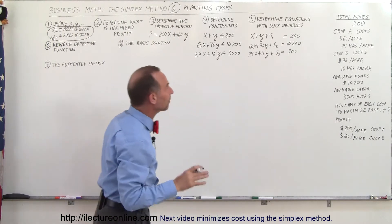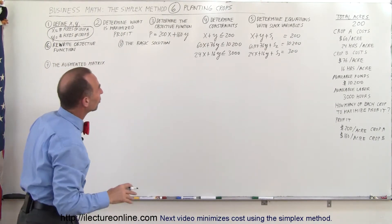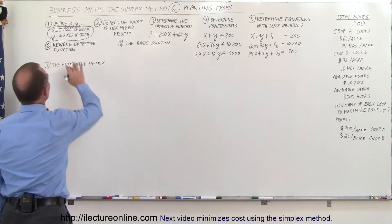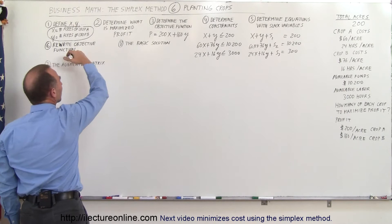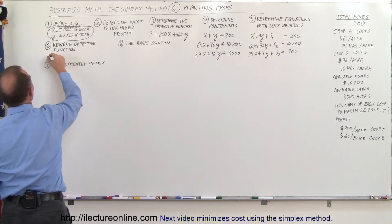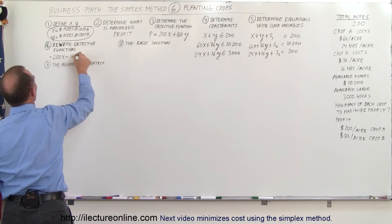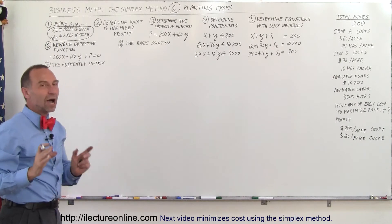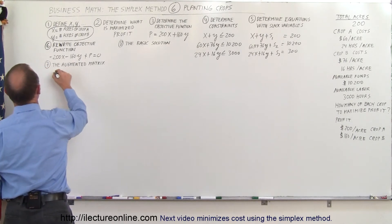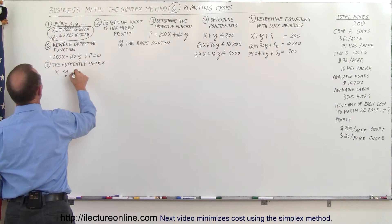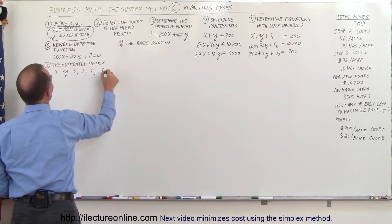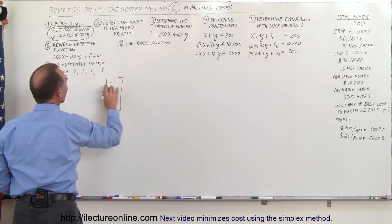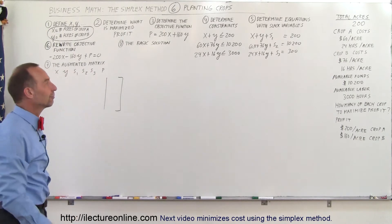We'll end up with three equations in our matrix because of the three constraints, plus a fourth equation for the objective function. We need to rewrite the objective function so we can put it in the matrix — moving everything to the left side gives us: minus 200x minus 160y plus P equals zero. Now we can put the augmented matrix together. We have variables x, y, three slack variables, the profit variable, and the augmented portion with all numbers to the right of the equal sign.